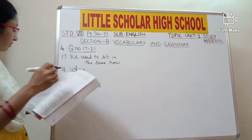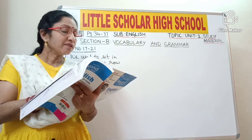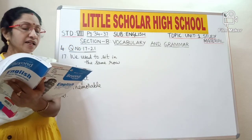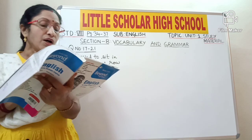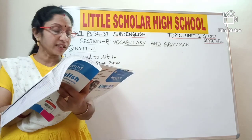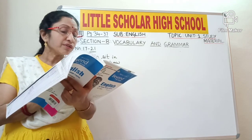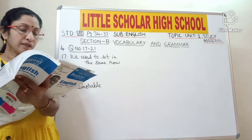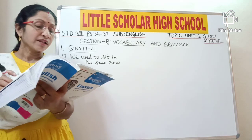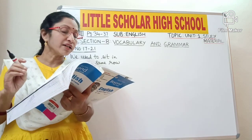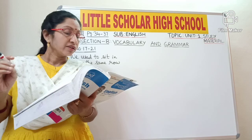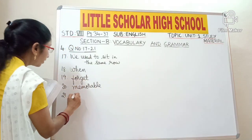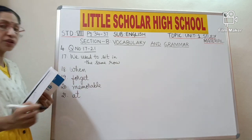Question number 21: 'Still I remember the roaring of the Krishna river of the dam.' The word 'of' is underlined — it is a preposition. We have to use the correct preposition in place of the underlined word. The right preposition is 'at': 'roaring of the Krishna river at the dam'. So the preposition 'of' is replaced with 'at'.